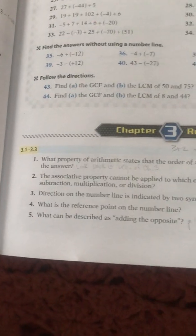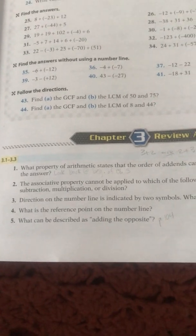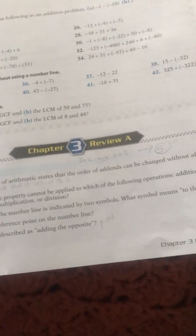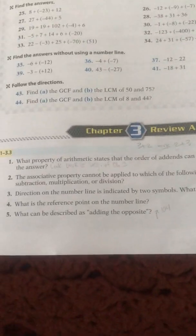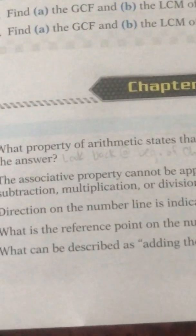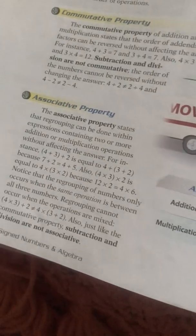The next question is, the associative property cannot be applied to which of the following operations? Addition, subtraction, multiplication, division. Let's look back. We know what property we need to look at now. I'm just going to go back to where they explain it, where I can look at some examples.